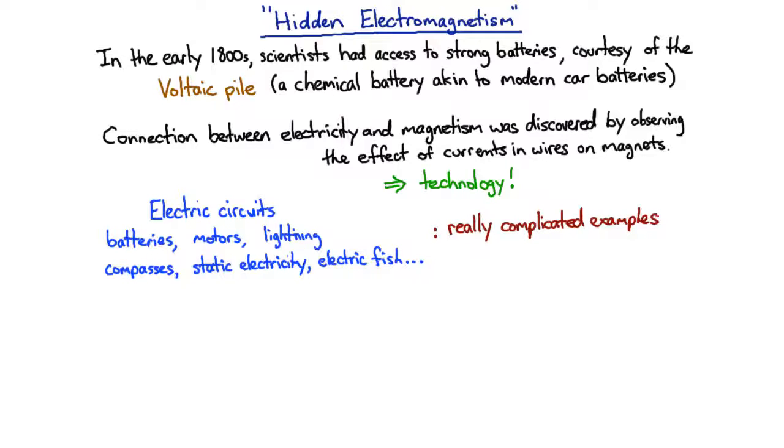The reason for that is electromagnetism fundamentally is all about charges and how they affect each other. In something like an electric circuit, battery, cloud, fish, or compass, there are so many charges in such complicated arrangements.